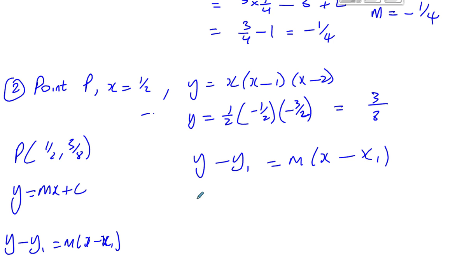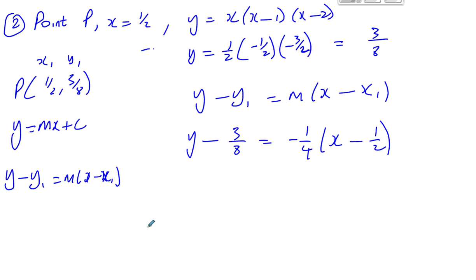Remember x1 and y1 are the points we know on the line, and m is the gradient. So we substitute: y minus 3 eighths equals negative a quarter times x minus a half. If we multiply everything by 8, that will get rid of the fractions. So you're going to have 8y minus 3 equals minus 2 times x minus a half.